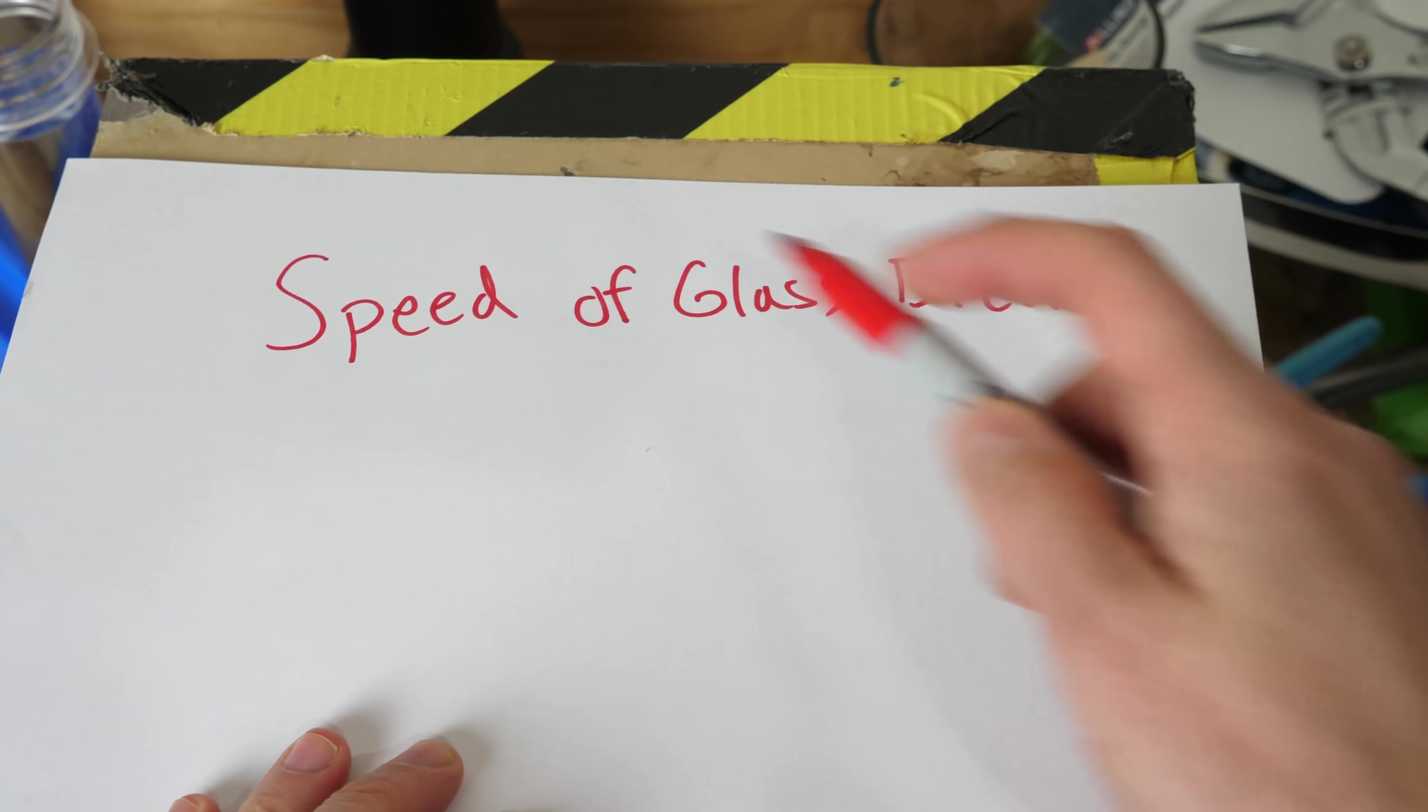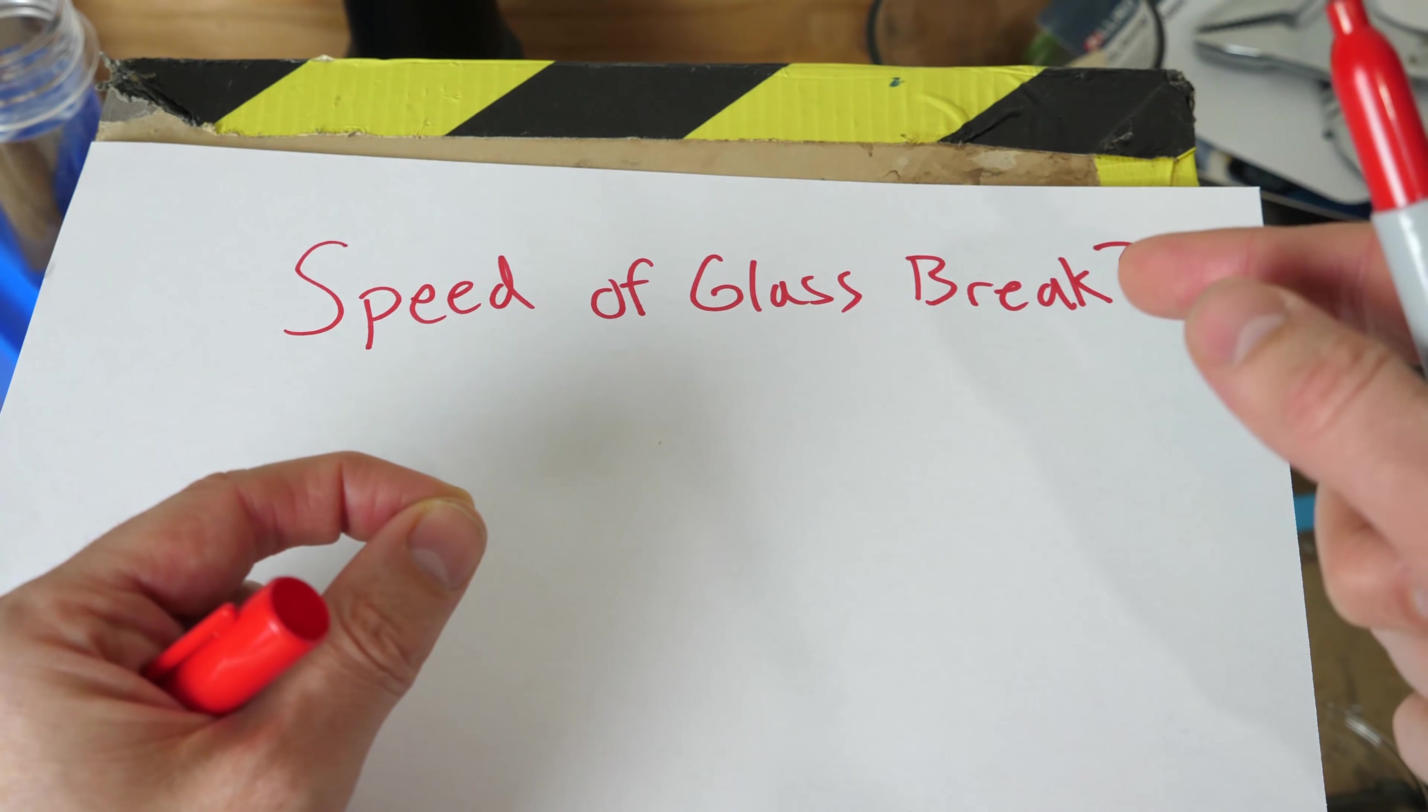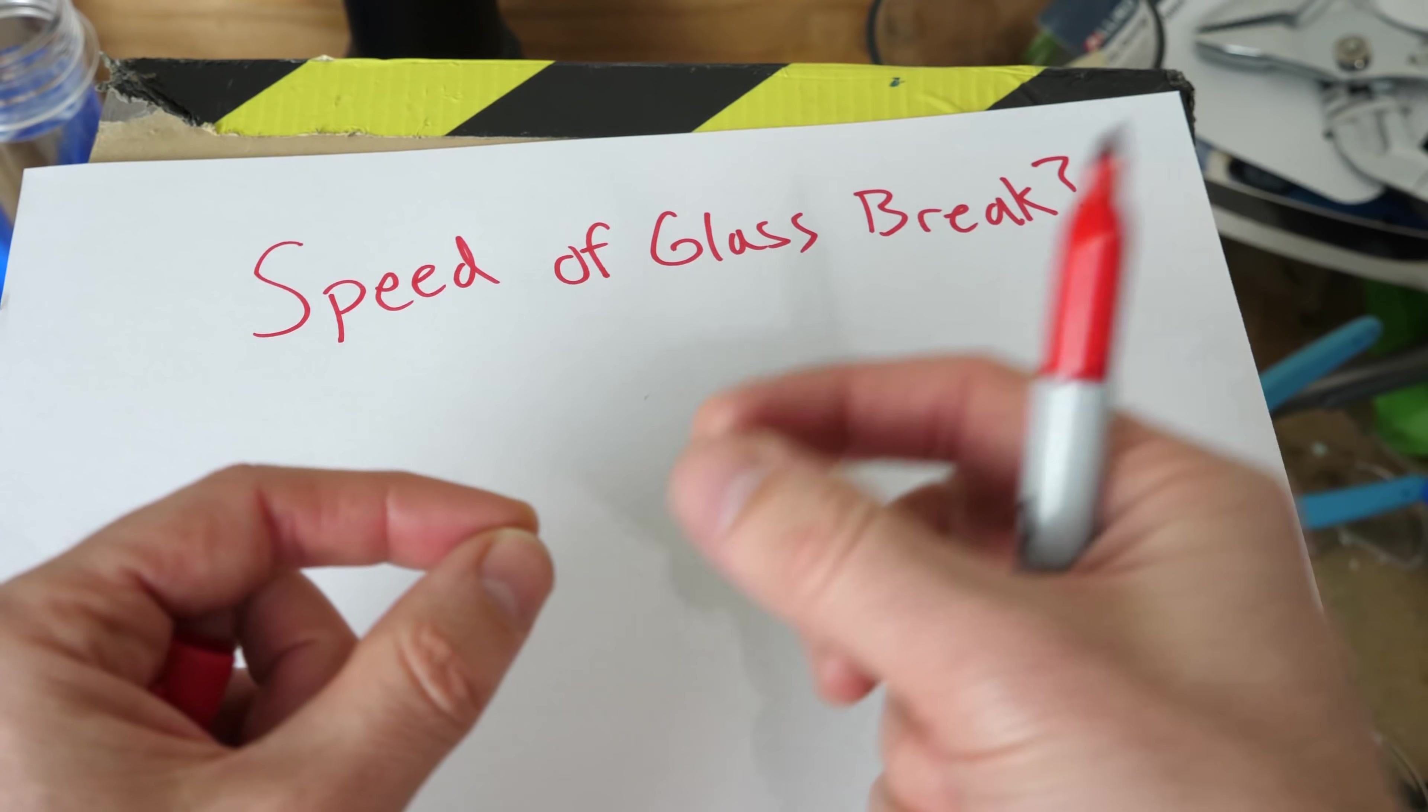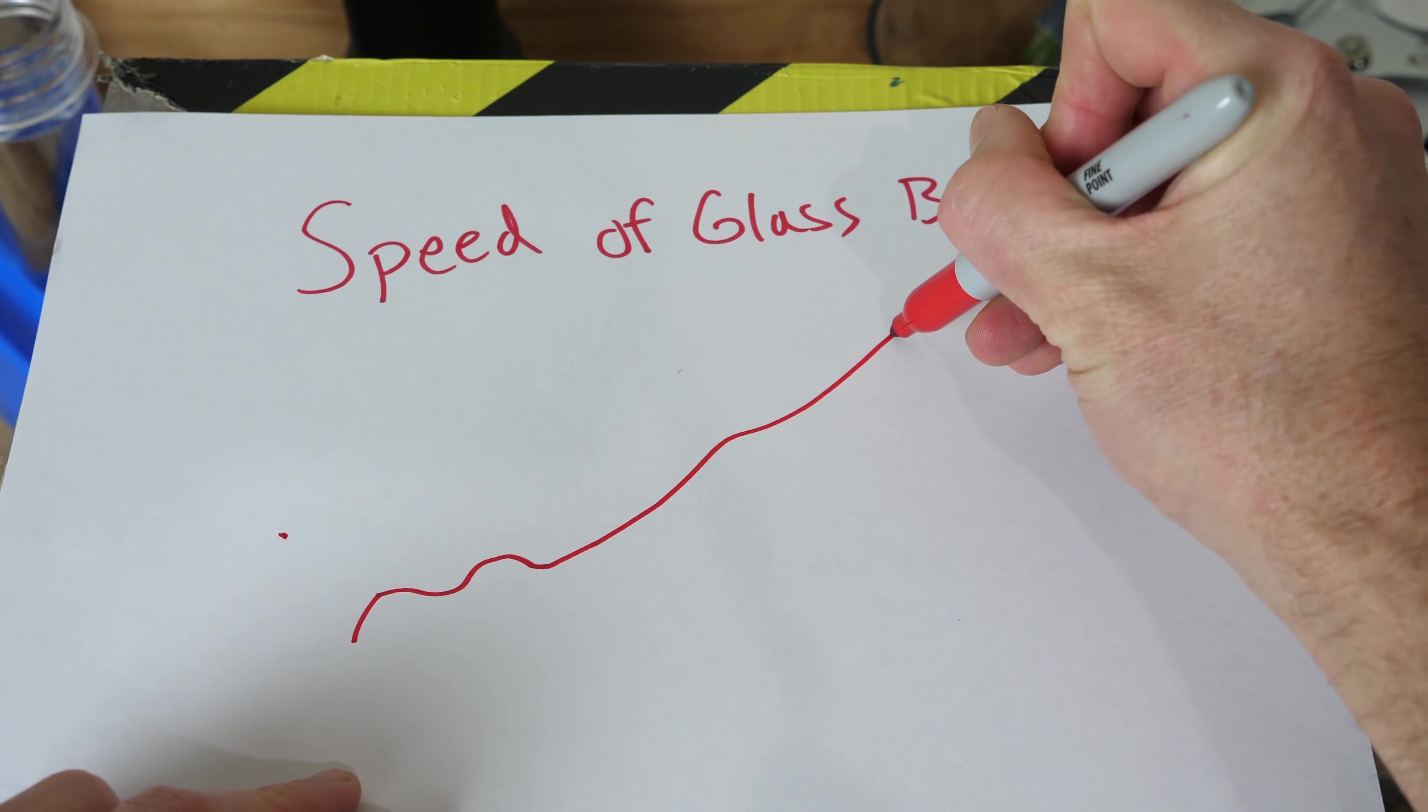And what's really interesting about the speed of glass breaking is that the velocity of a crack propagating through glass actually speeds up the longer it's been cracking. That's because the glass molecules are under tension and as they separate, they release energy. And so that gives the crack more energy to propagate. So it starts out slow and then it goes faster as it goes on.